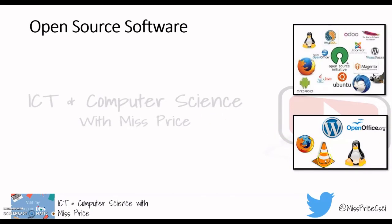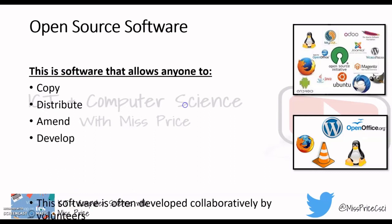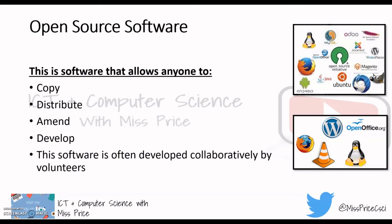Open source software — examples include VLC Player, Linux, and GIMP photo editor — allows anyone to copy, distribute, amend, and develop it. The software is generally developed collaboratively by volunteers. Because it's open source, you can copy it, change it, amend it, or develop it however you want.